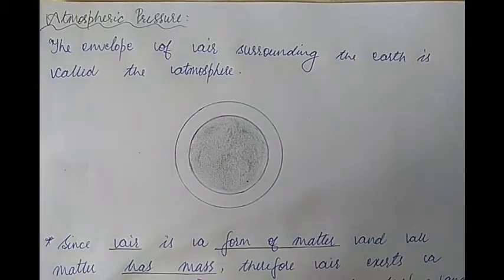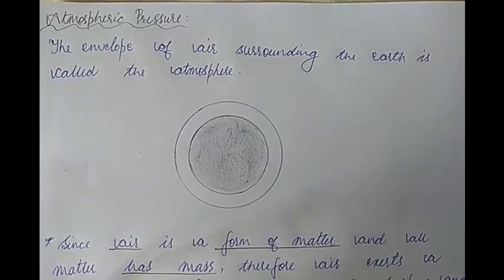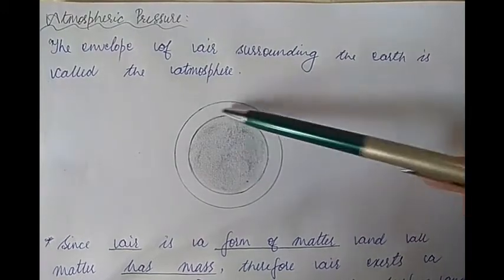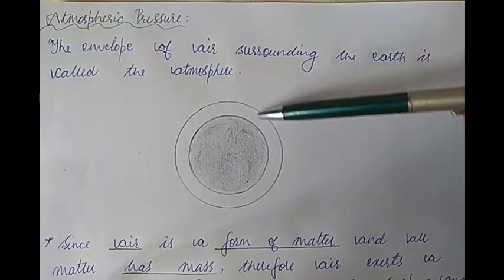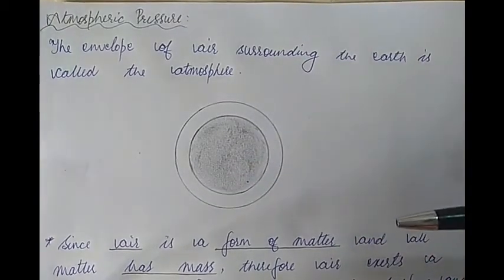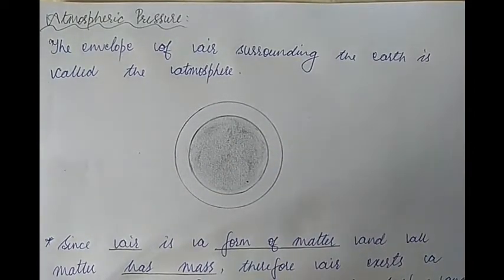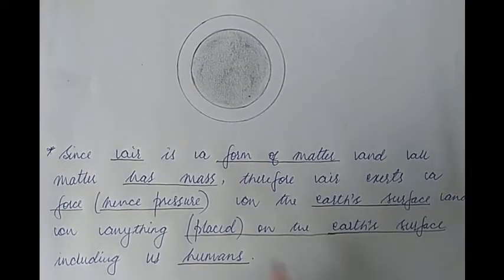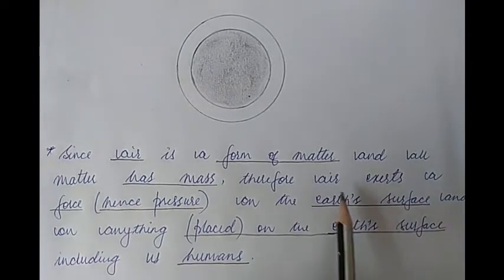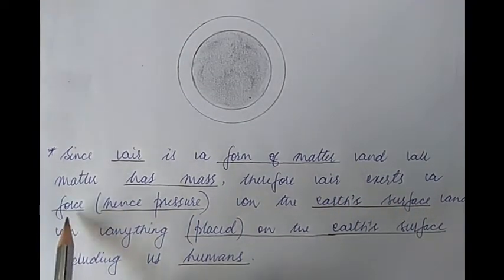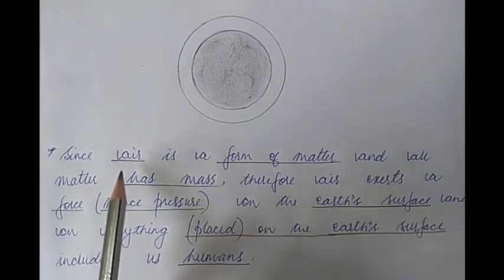In this video we discuss atmospheric pressure. The atmosphere is the mixture of gases, basically called air, that surrounds the earth. This envelope of air surrounding the earth is called the atmosphere. Since air is a form of matter, all forms of matter have mass, and anything that has mass has weight, which is a force. So air also exerts force, and when force is exerted on a certain area, that is called pressure. Therefore air also exerts pressure.